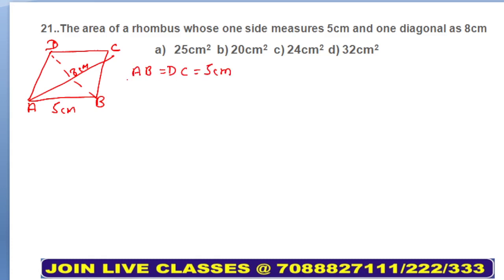Now you can say AB is equal to DC is equal to 5 centimeters. So here we can say AB is equal to 5 centimeters. Let this point be named as O. Mark this point as O.